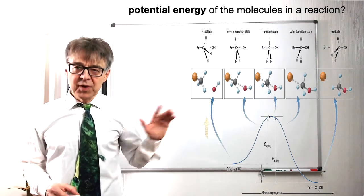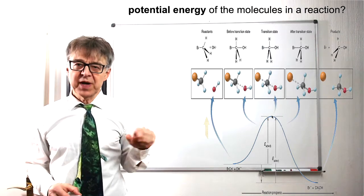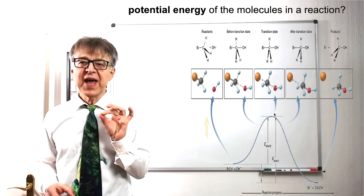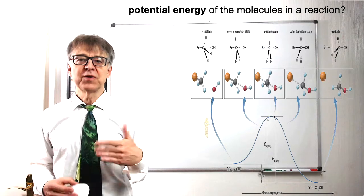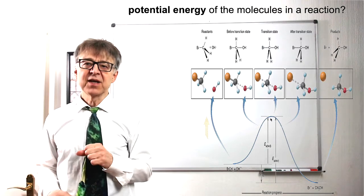The maximum, the most energetic configuration on the way from the reactant to the product, we call the activated complex or transition state, and it is marked with a double dagger.